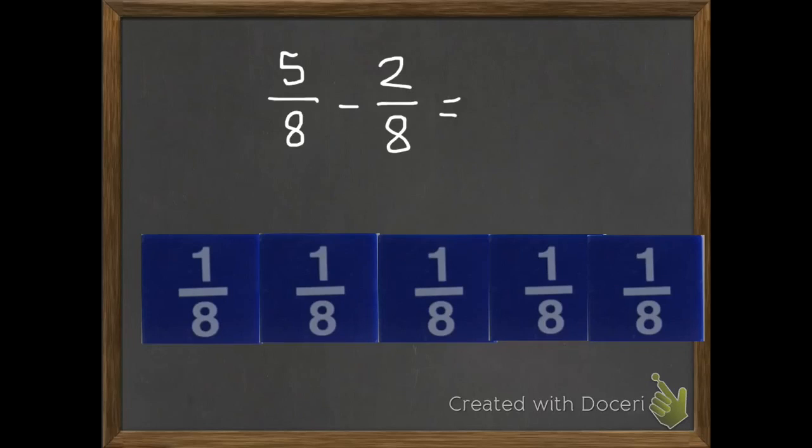Then I'm going to subtract 2 eighths, so I'm going to get rid of 2 of these eighths. Get rid of 1, get rid of 2, and now I have to figure out how many eighths I have left.